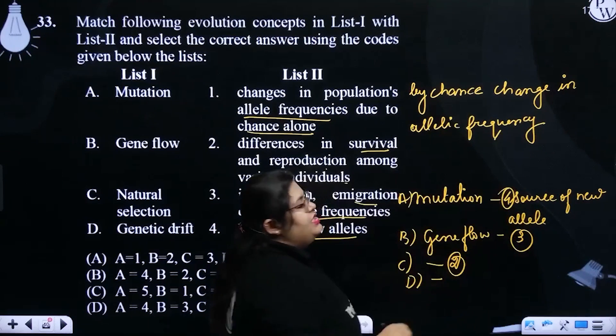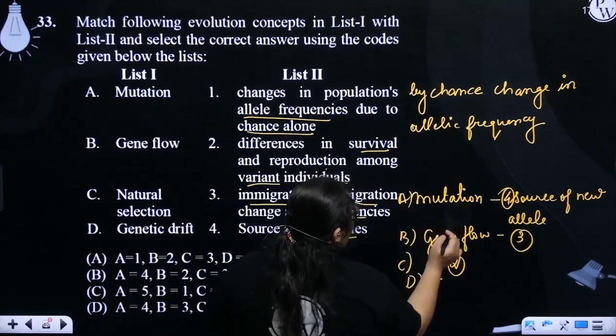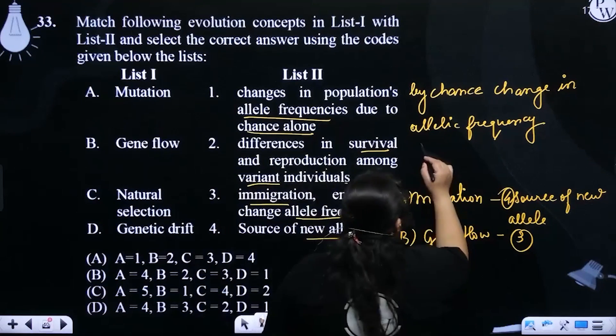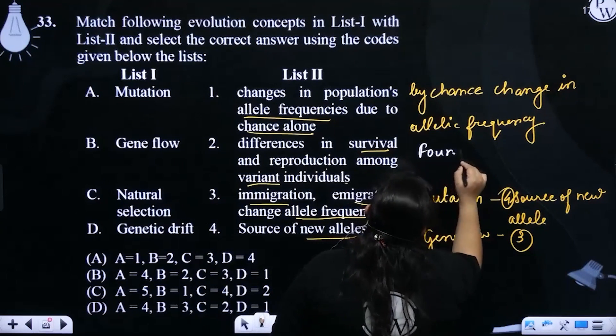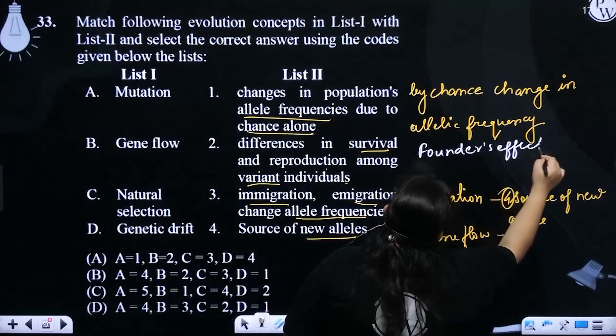Genetic drift has two ramifications: one is the founder's effect and the other is the bottleneck effect.